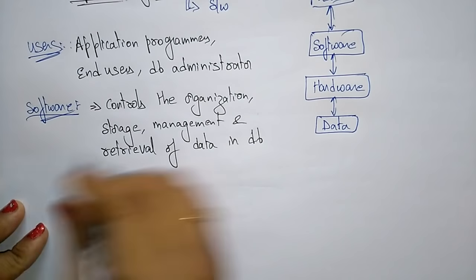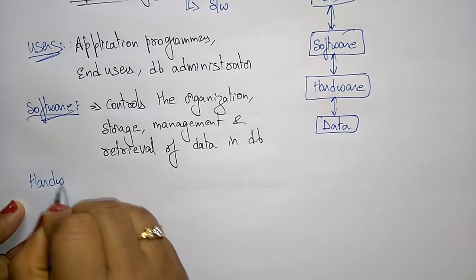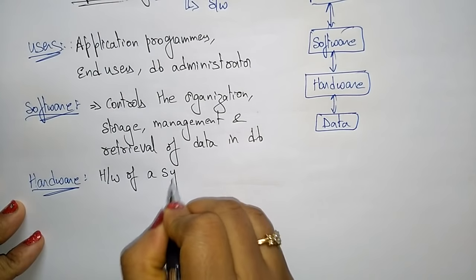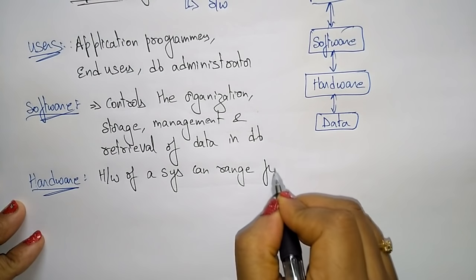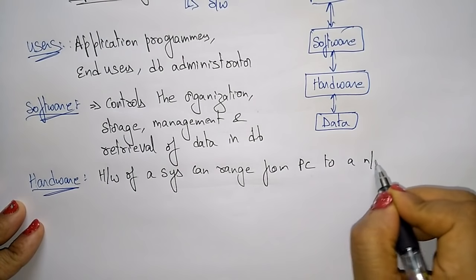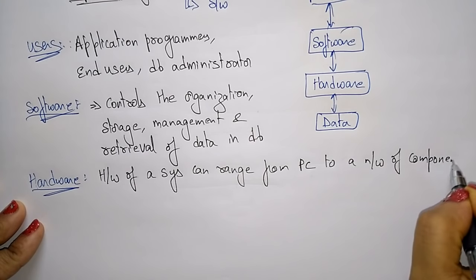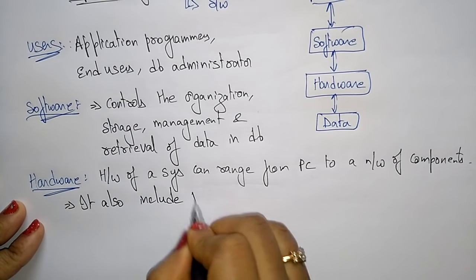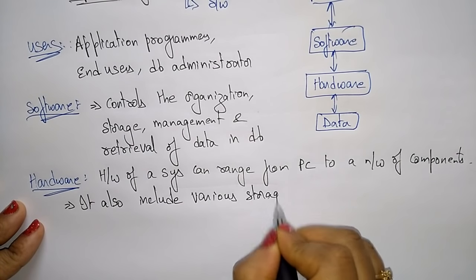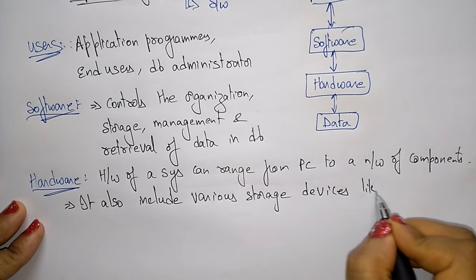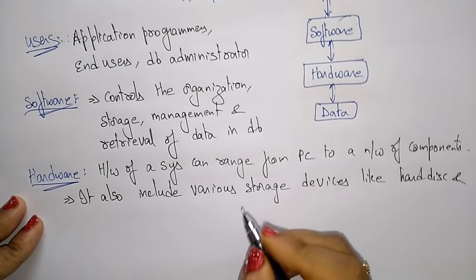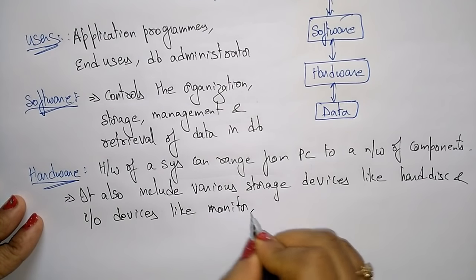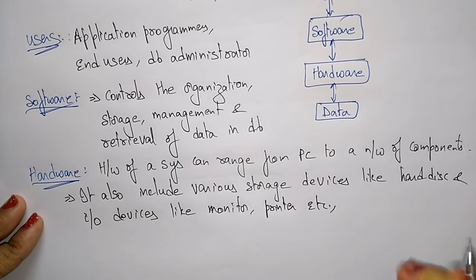Now coming to hardware — what role does it perform in a database management system? Hardware of a system can range from a PC to a network of components, and it also includes various storage devices like hard disk and some I/O devices.